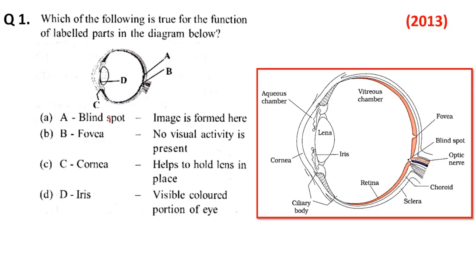A is blind spot — the image is formed? No, blind spot is not a point where image is formed; no visual activity is present in fovea centralis. Cornea helps to hold the lens in place, and the iris is the visible colored portion of the eye. So option D is right here.